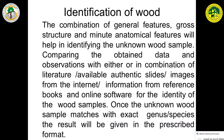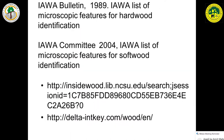Comparing the obtained data and observations with — in combination — literature, available authentic slides, images from the internet, information from reference books, and online software helps identify wood samples. Once the unknown wood sample matches with an exact genus or species, the result is given in the prescribed format. When studying anatomical characters, we follow the IAWA bulletin 1989 list of characters, and two software tools are used for identification.